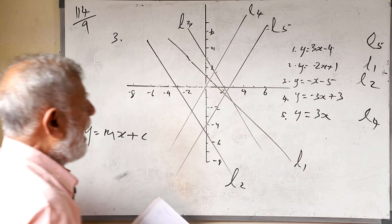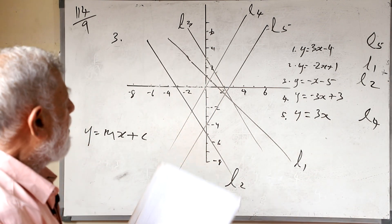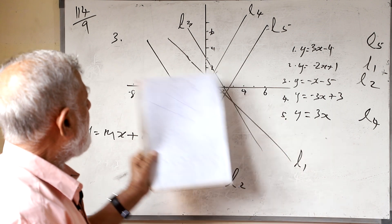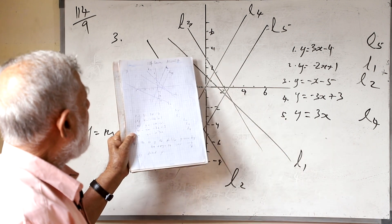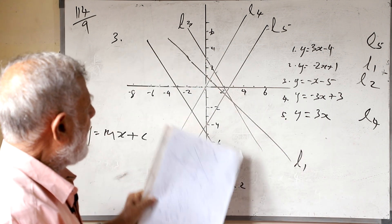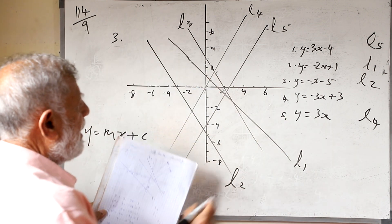The last one — plus 3 — is going through plus 3. Which is the line going through plus 3? It is this line — L3.